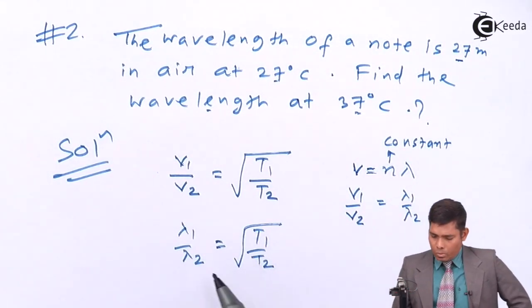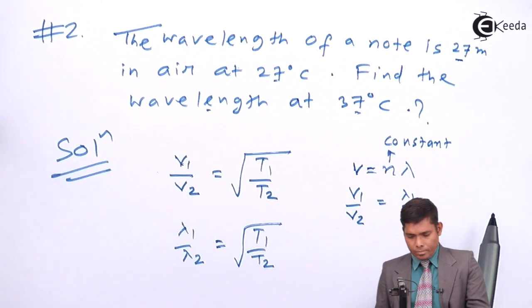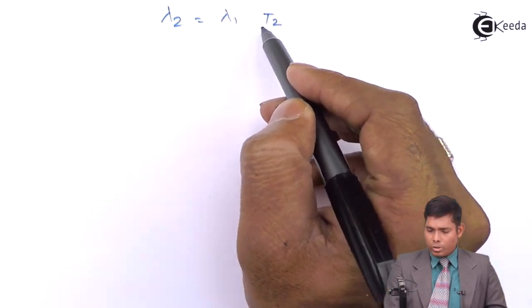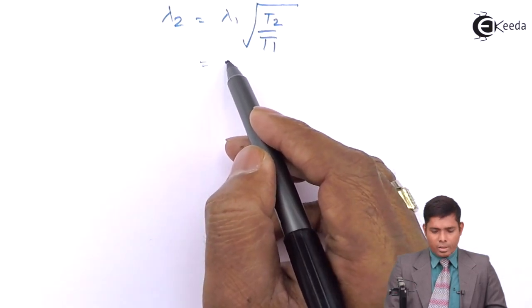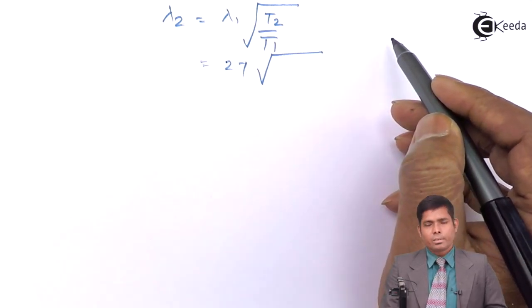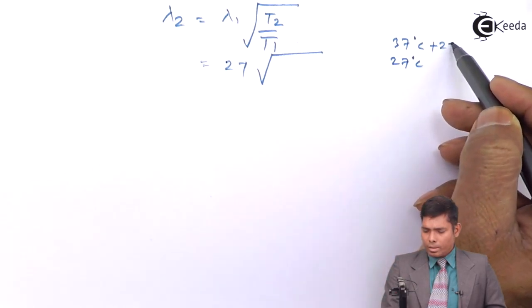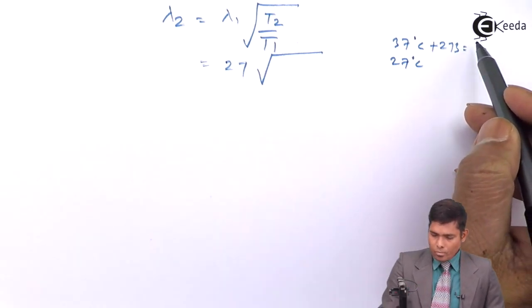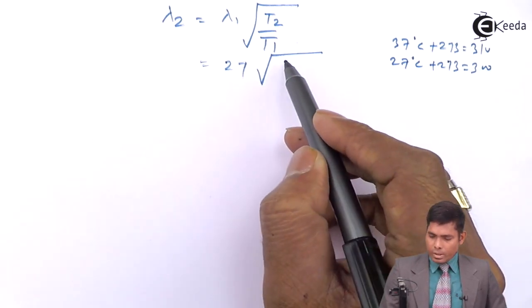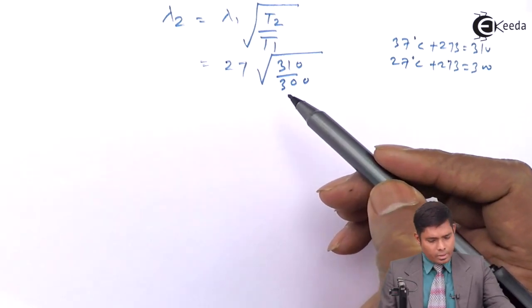So, using this relation, I can find what is lambda 2. Lambda 2 is lambda 1 into square root of T2 upon T1. Lambda 1 initially was 27 meter under root of T2 upon T1. It was 37 and 27 degree centigrade. So, this is plus 273. So, it is 310 and this is 300.